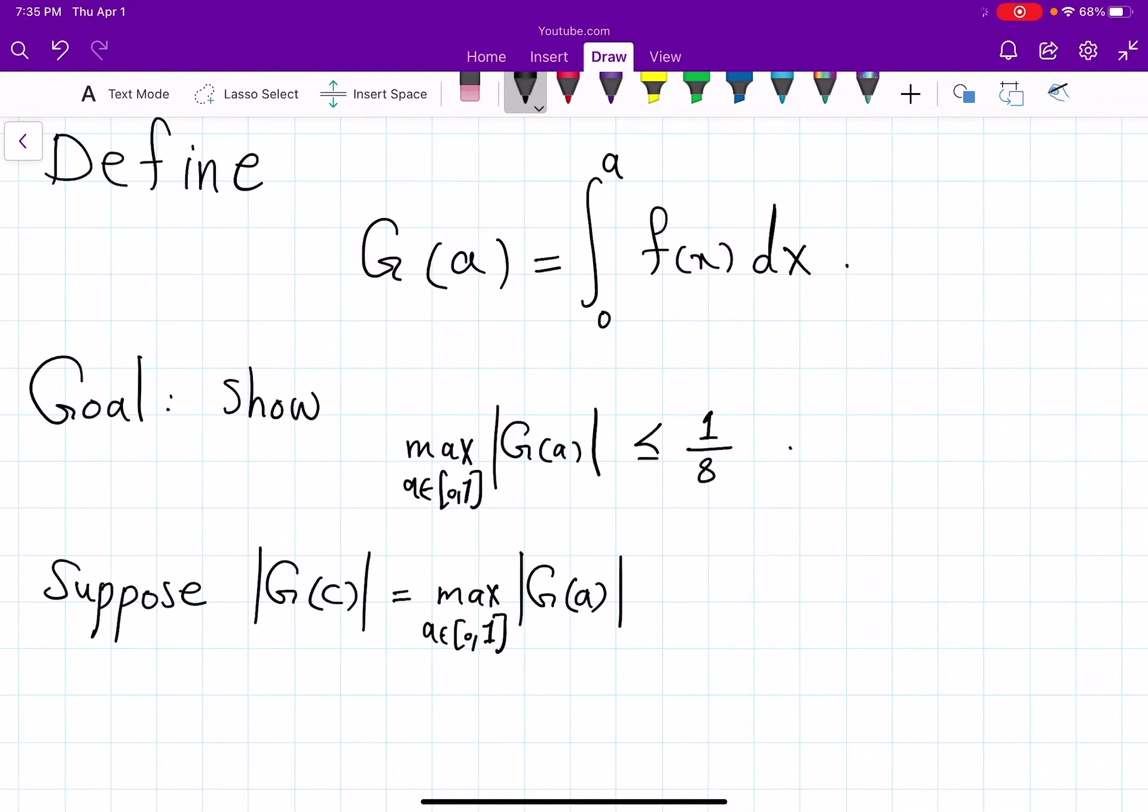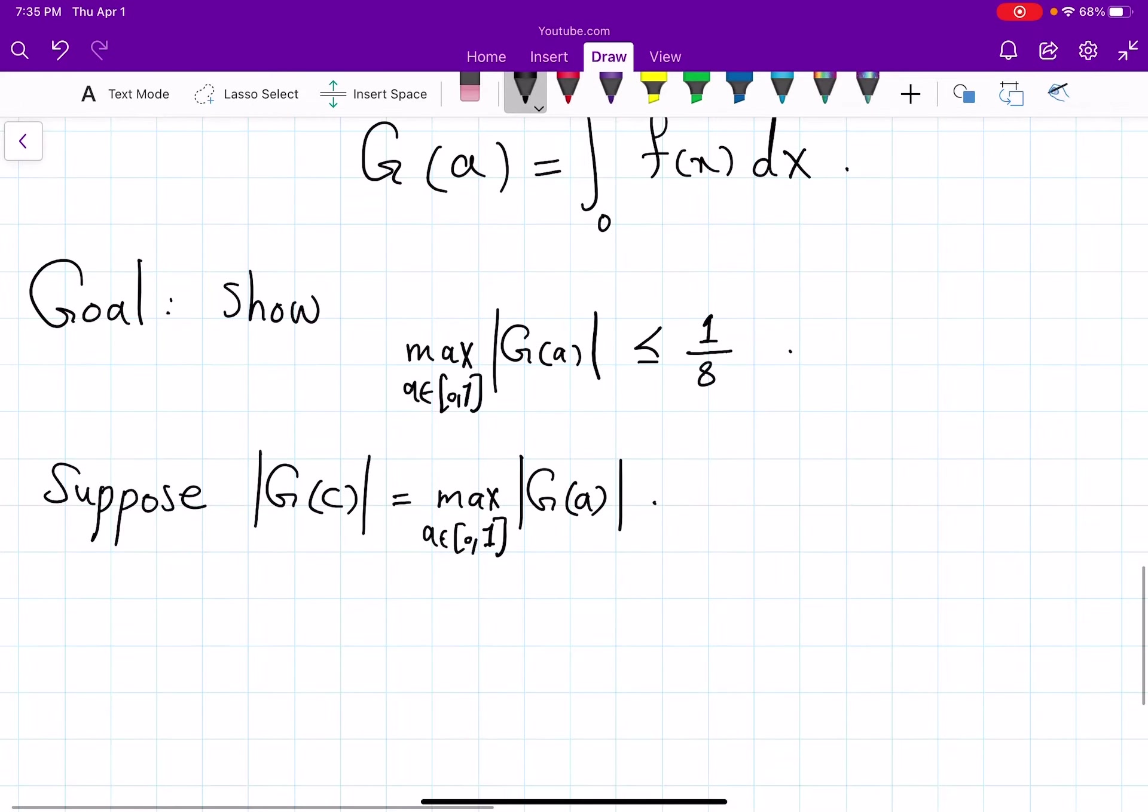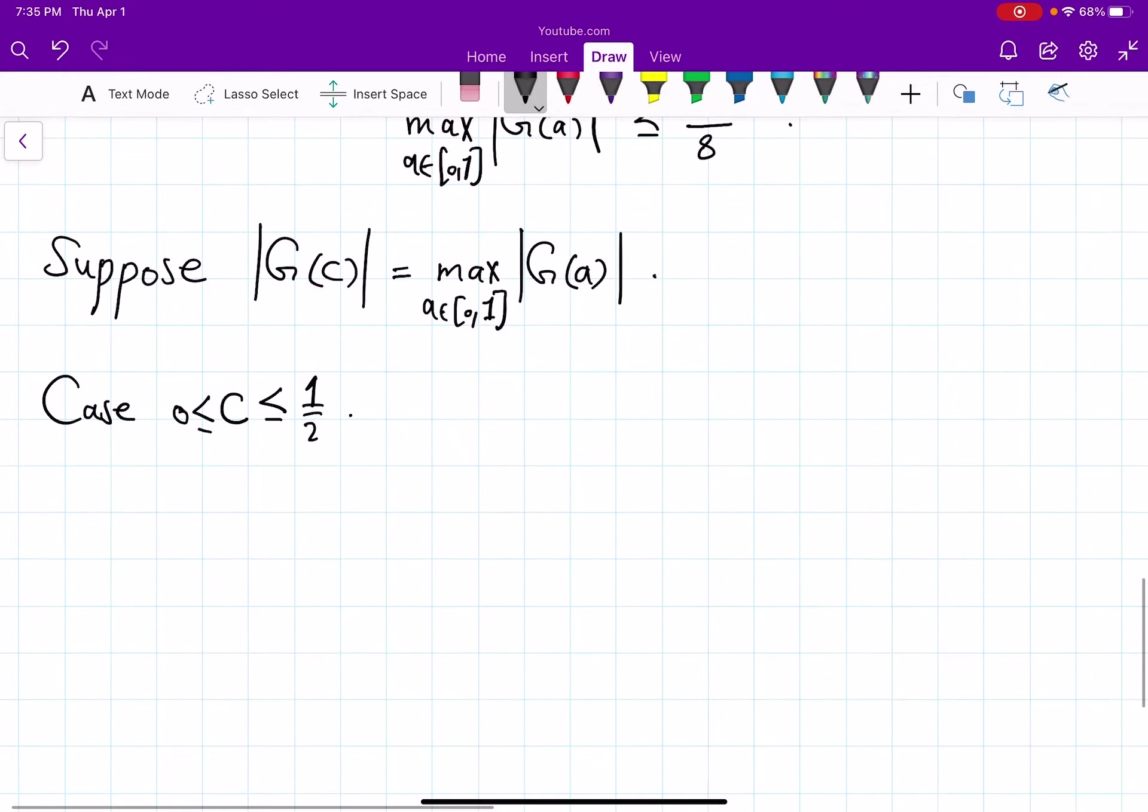For now, so the case c less than or equal to one half, of course bigger than or equal 0. So suppose that this maximum of g(a) happens somewhere before one half. I'm not saying without loss of generality, I'm saying a case, I'm opening one case. So what happens then?